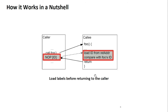In a nutshell, what we do is: in each caller, after the call to the callee, we insert a NOP instruction with some ID. Then, before the function terminates, we load that ID and compare the two IDs together. If those IDs match, we let the execution of the program continue; otherwise we stop the execution.